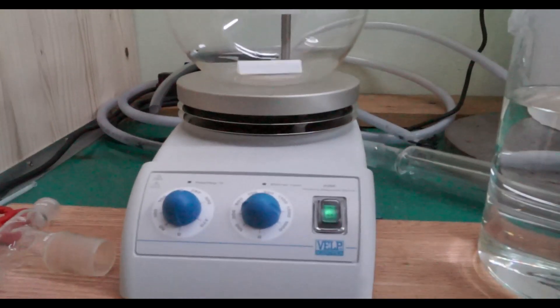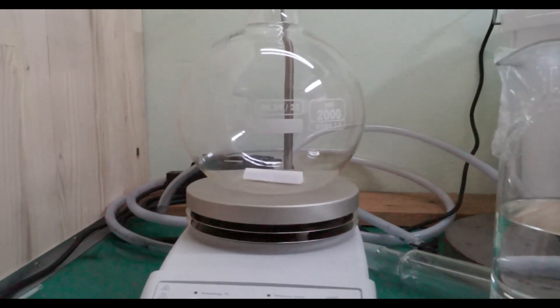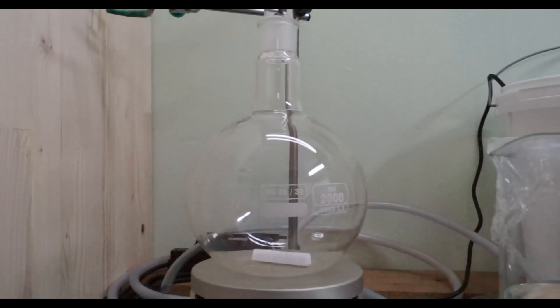I started by charging a 2.0 liter flask equipped with a magnetic stirrer with approximately 1000 milliliters of hydrochloric acid.